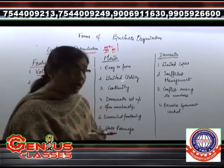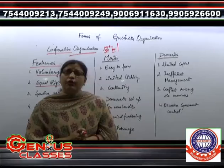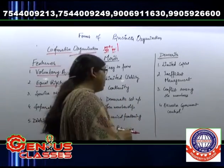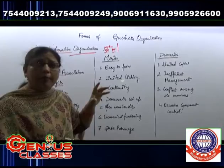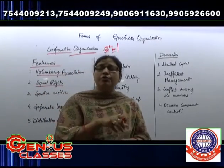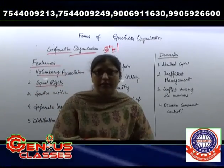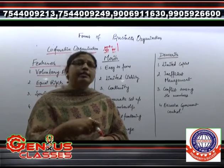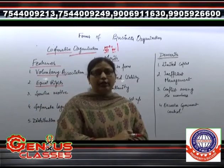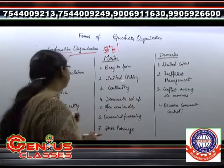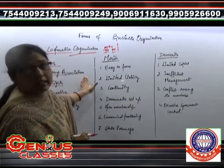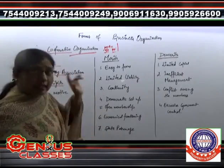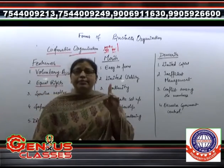Jo members hain, wahaan business ko control karne ke liye kuch representatives chahiye. Ab un representatives ko kaise select kiya jaata hai — by this democratic set up, one man one vote. So yahan pe equal rights are given to all members of the cooperative society, regardless of how much capital investment you have made.